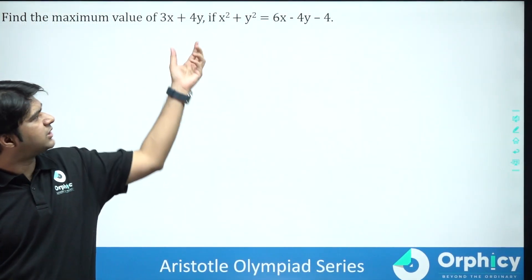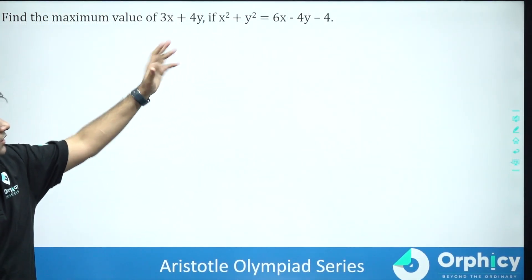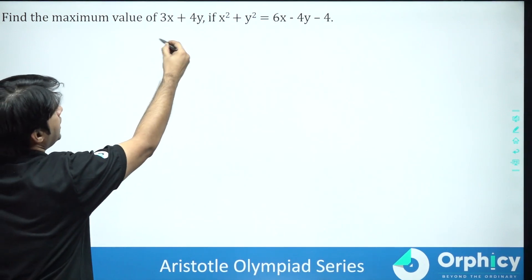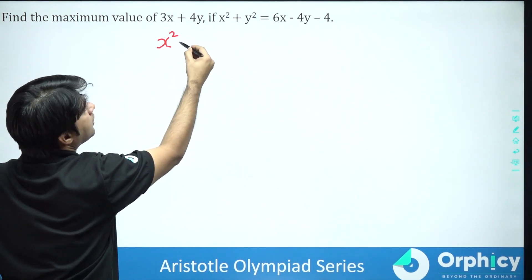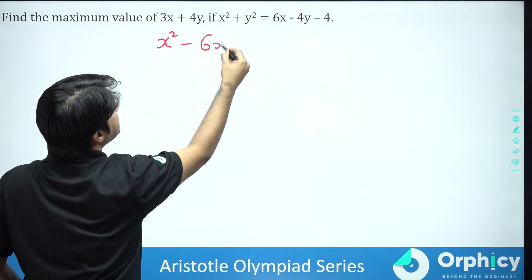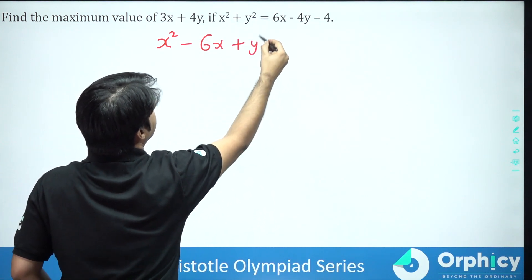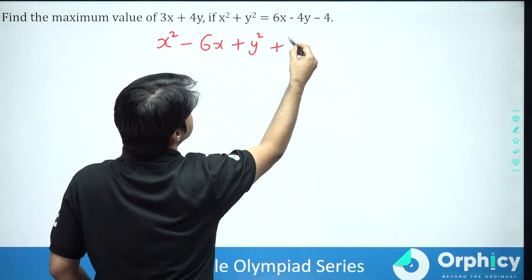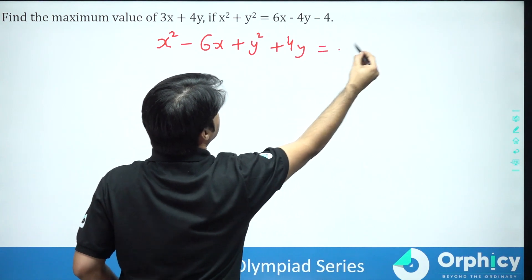Let's do this work. First of all, let's try to simplify it a little bit. So we are given that x square minus 6x plus y square plus 4y is equal to minus 4.